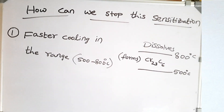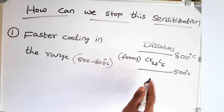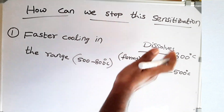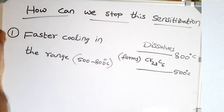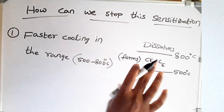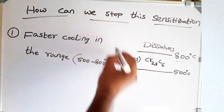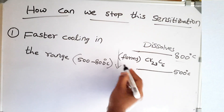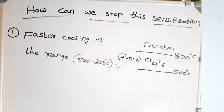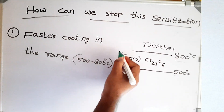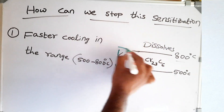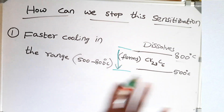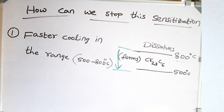How can we stop this sensitization? Chromium carbide precipitates at a temperature around 500°C and dissolves at a temperature above 800°C, so it forms in the temperature range of 800 to 500°C. If we cool quickly through this region, no chromium carbide is formed and we can avoid sensitization. We can cool slowly until 800°C, then cool very quickly through to 500°C, completely avoiding the formation of chromium carbide. This is one way of stopping sensitization.